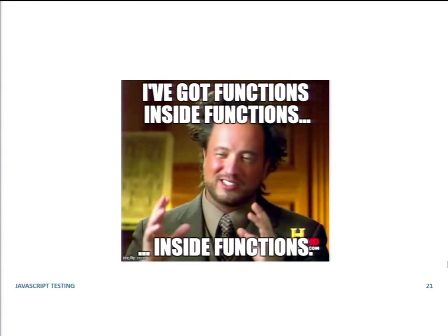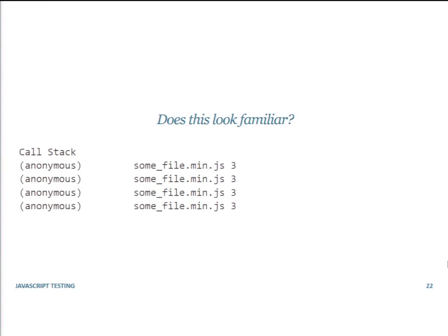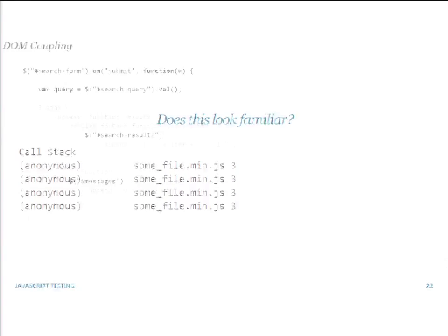In addition to that, you'll notice all of these functions are unnamed — so this is what you get in your call stack when you get an error. You look in DevTools or F12 Tools and you see anonymous, anonymous, anonymous, anonymous, anonymous. Because none of those functions are named; they're all declared inline. So beyond just testing the code, you can't even see where the problem is.